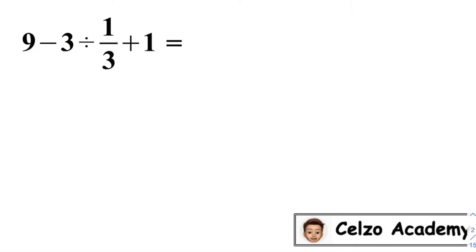The given numerical expression is 9 minus 3 divided by 1 third plus 1. There are no grouping symbols like parentheses or brackets, and there are no exponents as well. So which one do we need to simplify first? In this expression, we need to simplify the division first: 3 divided by 1 third.